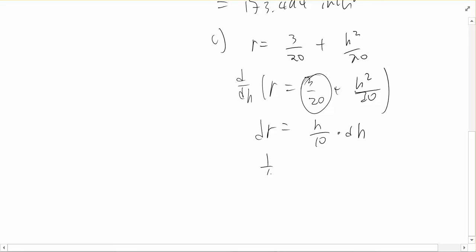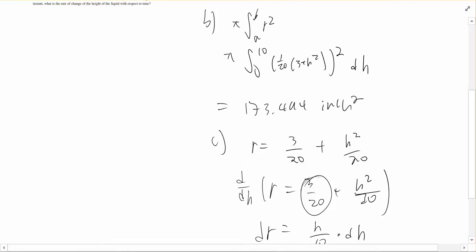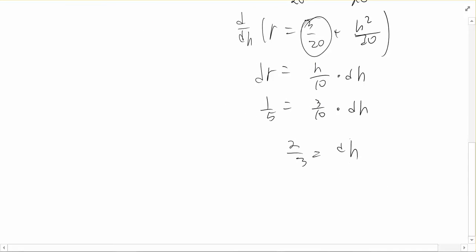So 1 half would fit into dr and height will be 3 times dh. If we solve that out, we get 2 over 3 equals dh. dh is basically just the change in height with respect to time, so that would be 2 over 3 inch per second.